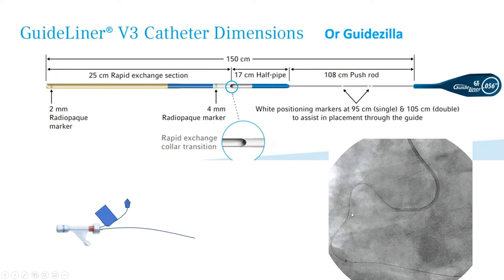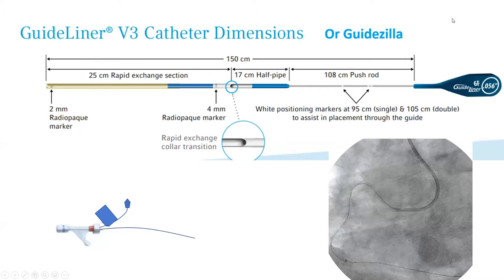There is one type called the Trapliner that also has a balloon proximal to the monorail portion, allowing you to trap devices during exchanges. The Trapliner comes in 13 centimeter length, so you cannot advance it very deeply — that's one disadvantage. Guideliner comes in six, seven, and eight French — those are the three main sizes. The size is smaller than what it says: a six French guideliner is like a five French guide. Keep that in mind — you cannot do kissing balloons through a six French guideliner because it's like a five French guide.